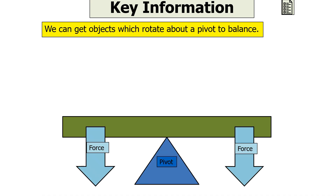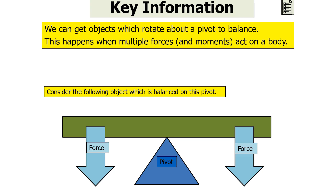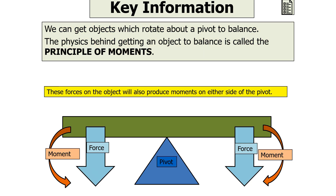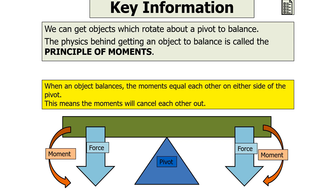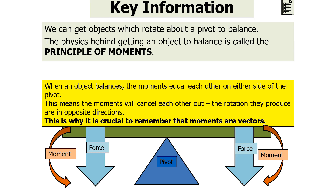Objects which rotate about a pivot can balance. Consider the following object which is balanced on a pivot. Multiple forces and moments will act on the body. The physics behind getting an object to balance is called the principle of moments. These forces on the object will produce moments on either side of the pivot. When an object balances, the moments on either side of the pivot must equal each other, because the rotations they produce are in opposite directions and cancel out — which is why it's crucial to remember that moments are vectors.